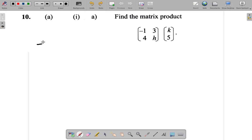So that's negative 1, 3, 4, H multiplied by K, 5. Now, in multiplying the matrices, remember it's row by column. Alright, row by column.